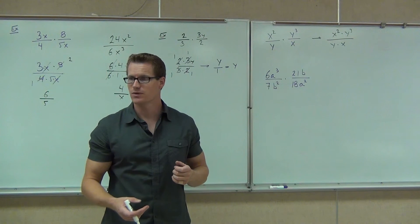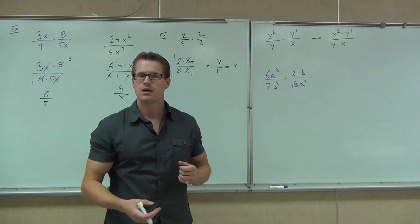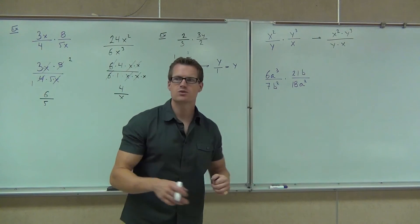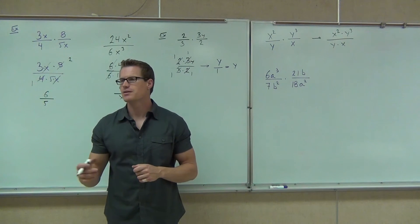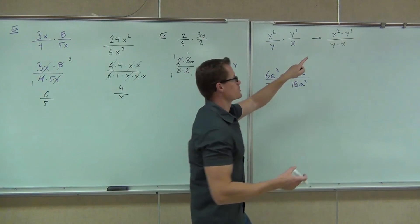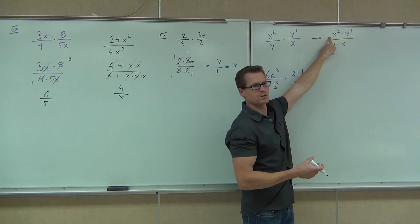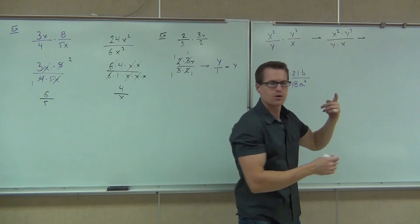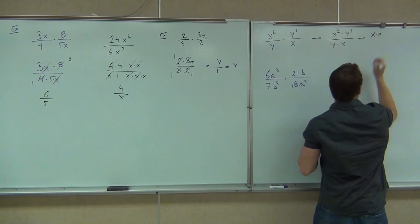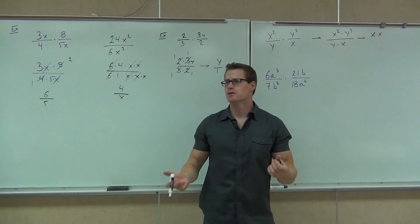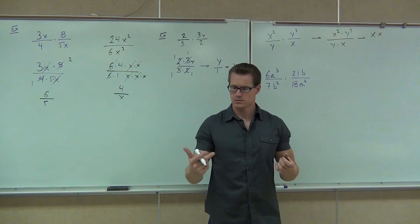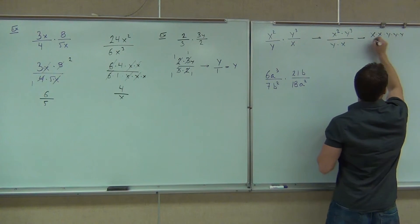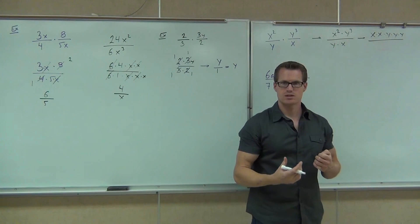If you're having trouble seeing the common factors, do this extra step: think about what x squared actually means — x times x. Write it like that. And y cubed means y times y times y. This is a lot easier to see doing it this method. Now, if we had something like x to the 14th and y to the 21st, you wouldn't want to write out all those factors, so ultimately you'll learn to use your exponent rules — but we haven't covered that yet, so we won't deal with exponents that large.